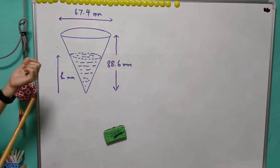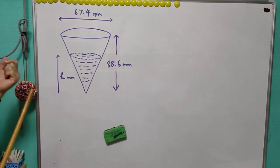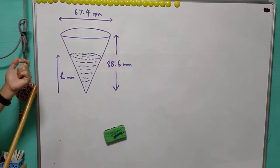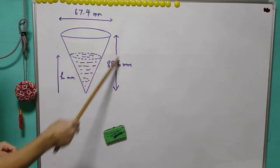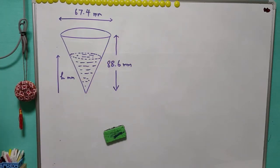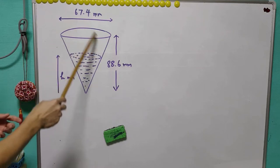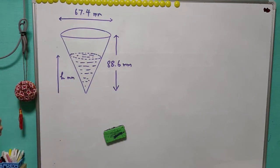As shown in the diagram, this is a standard dimension of the cone-shaped paper cup in the market. The height is 88.6 millimeter. The diameter is equal to 7.4 millimeter.